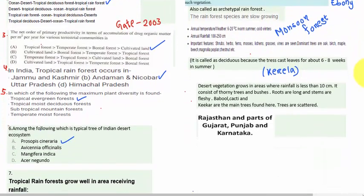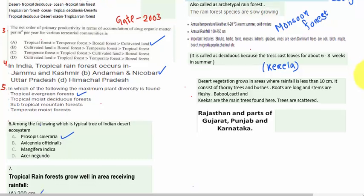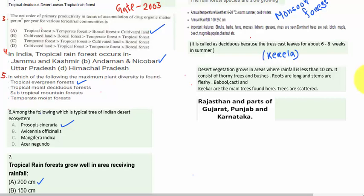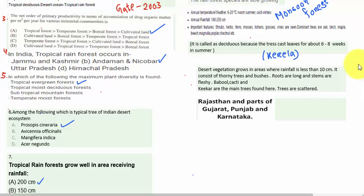The next question is the net order of productivity in terms of accumulation of dry organic matter per meter square per year for various terrestrial communities — a question from GATE 2003. The answer is: tropical forest is highest, then temperate forest, then boreal forest, then cultivated land.